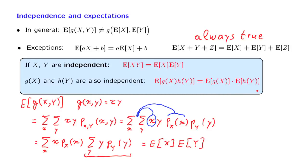We could also prove this property directly without relying on the intuitive argument. We could just follow the same steps as in this derivation. Wherever there's an x, we would write g of x. And wherever there is a y, we would write h of y. And the same algebra would go through, and we would end up with the expected value of g of x times the expected value of h of y.